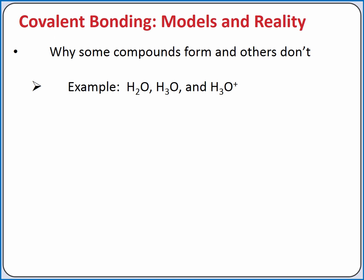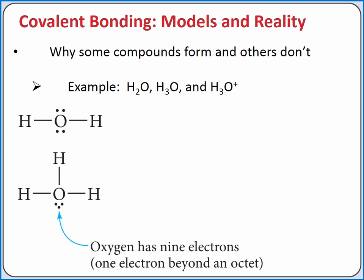Lewis structures can help us understand why some molecules form and others do not. For example, we already saw that H₂O forms to satisfy the octet and duet rules for oxygen and hydrogen. If we tried to create H₃O by adding another hydrogen atom,